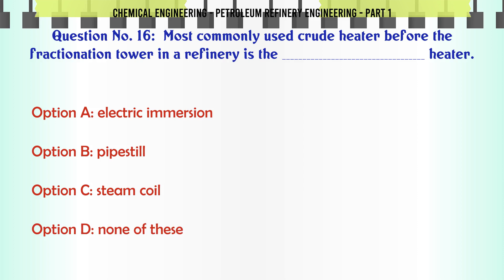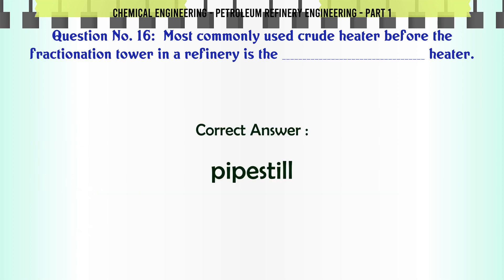Most commonly used crude heater before the fractionation tower in a refinery is the: A. Electric immersion heater, B. Pipestill heater, C. Steam coil heater, D. None of these. The correct answer is Pipestill.